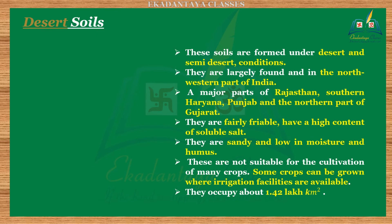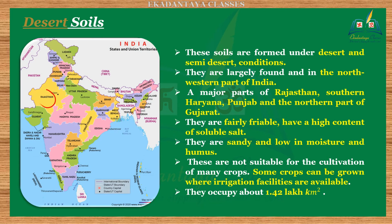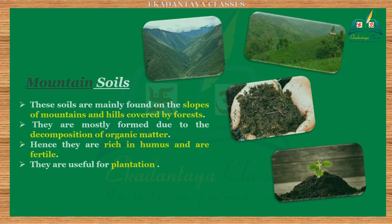Five: desert soils. These soils are formed under desert and semi-desert conditions. They are largely found in the northwestern part of India — major parts of Rajasthan, southern Haryana, Punjab, and the northern part of Gujarat. They are fairly friable, have a high content of soluble salts, and are sandy, low in moisture and humus. They are not suitable for the cultivation of many crops; some crops can be grown where irrigation facilities are available. They occupy about 1.42 lakh square kilometers.